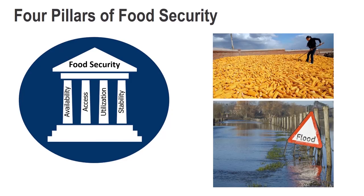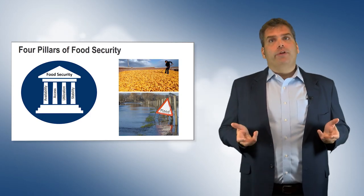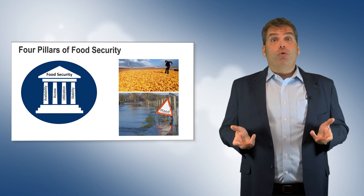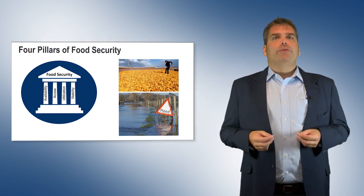Availability deals with the supply side of food production. It not only concerns the amount of food produced, but whether food can be brought to market and exchanged for some form of currency. Droughts, floods, land degradation, and poor infrastructure can greatly reduce availability.